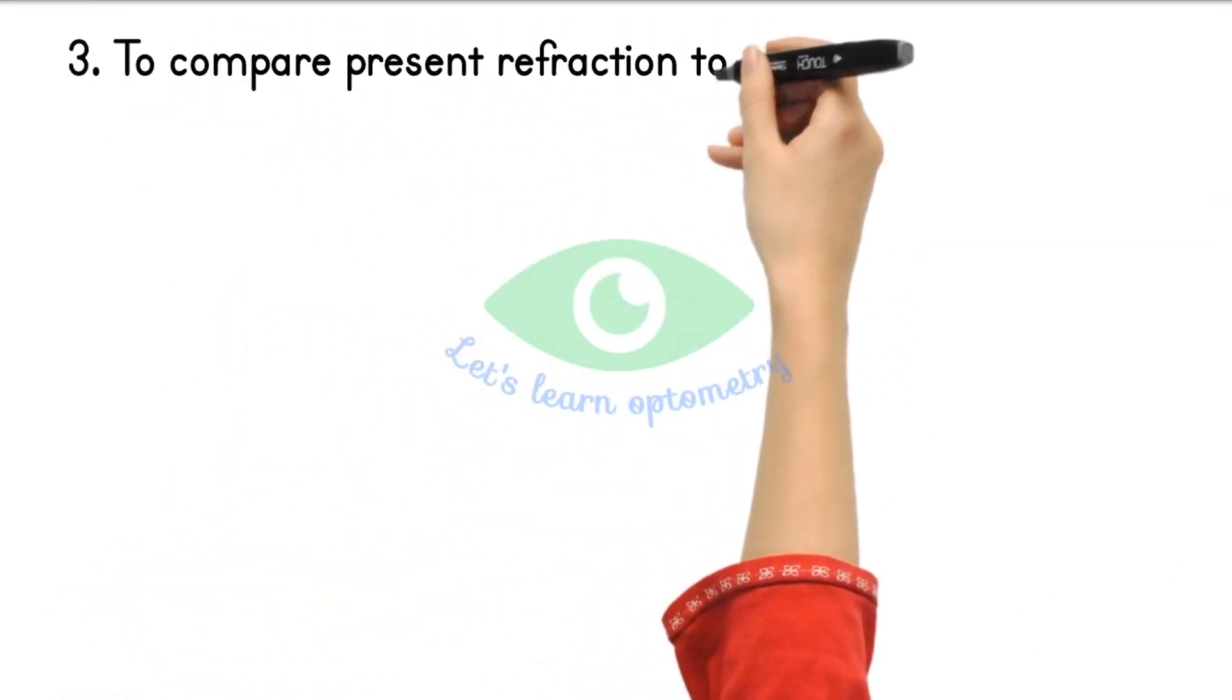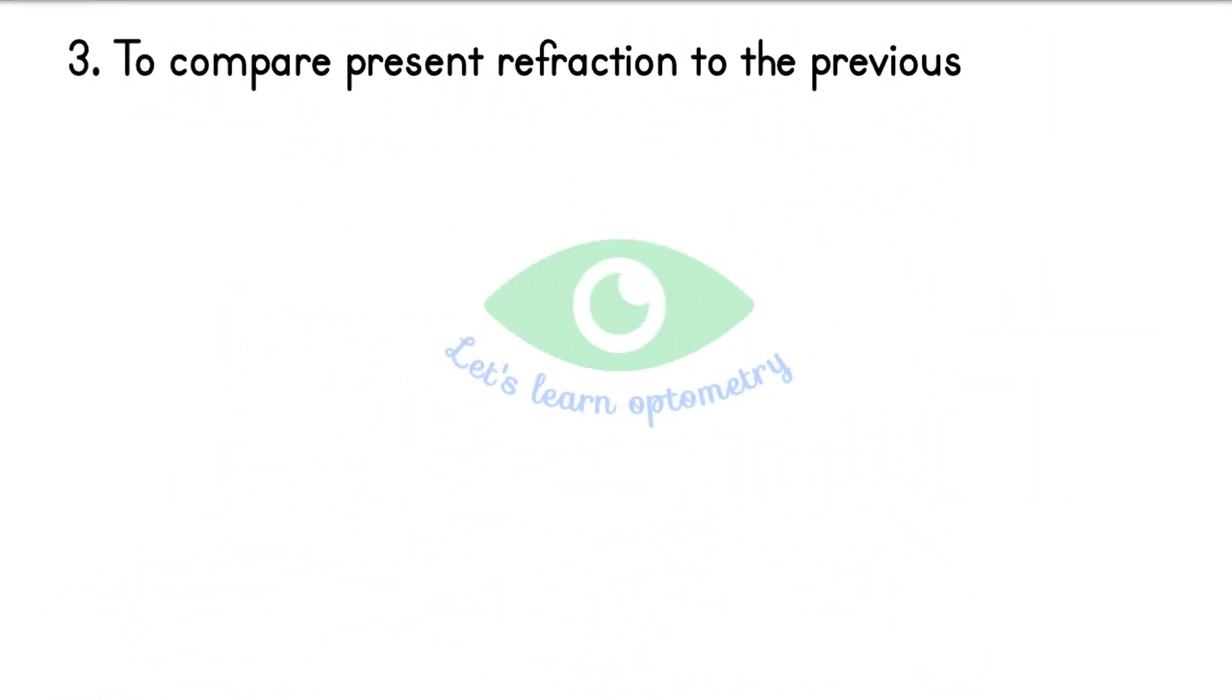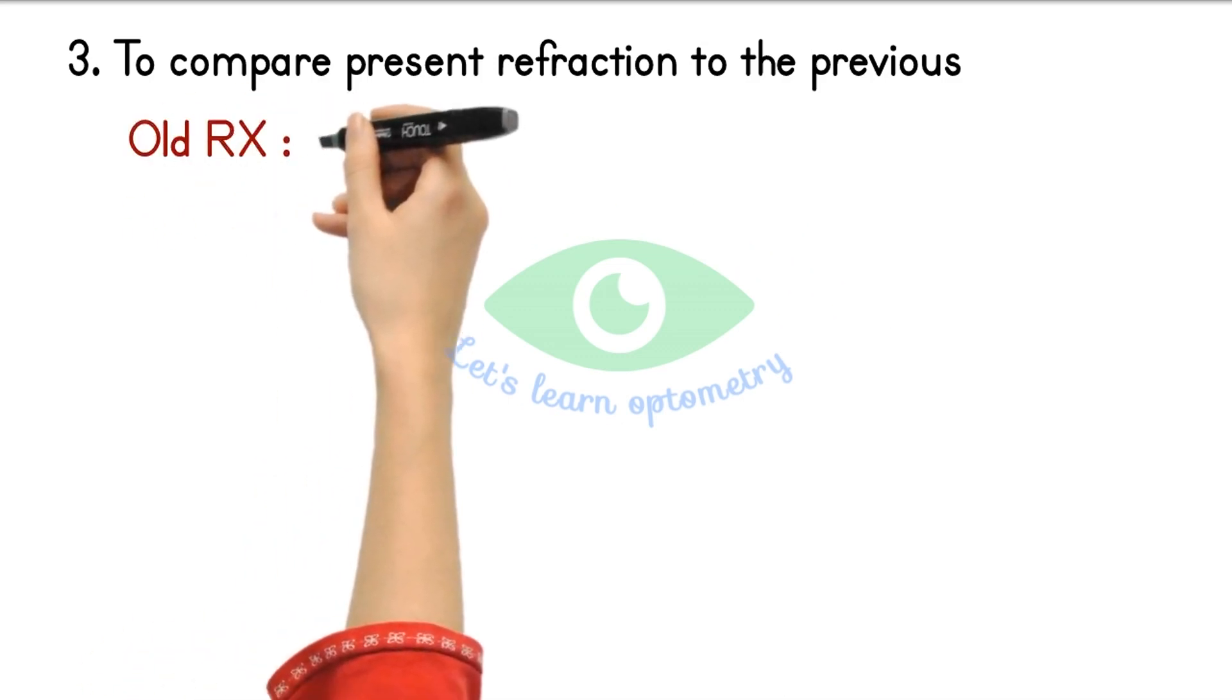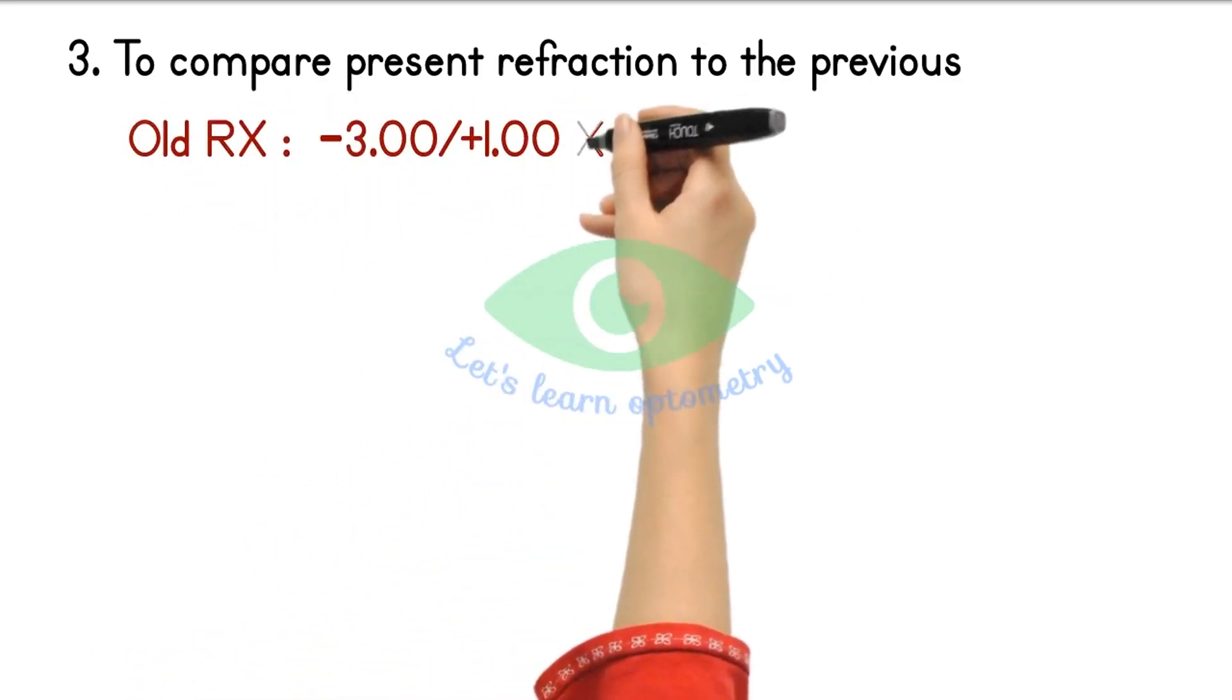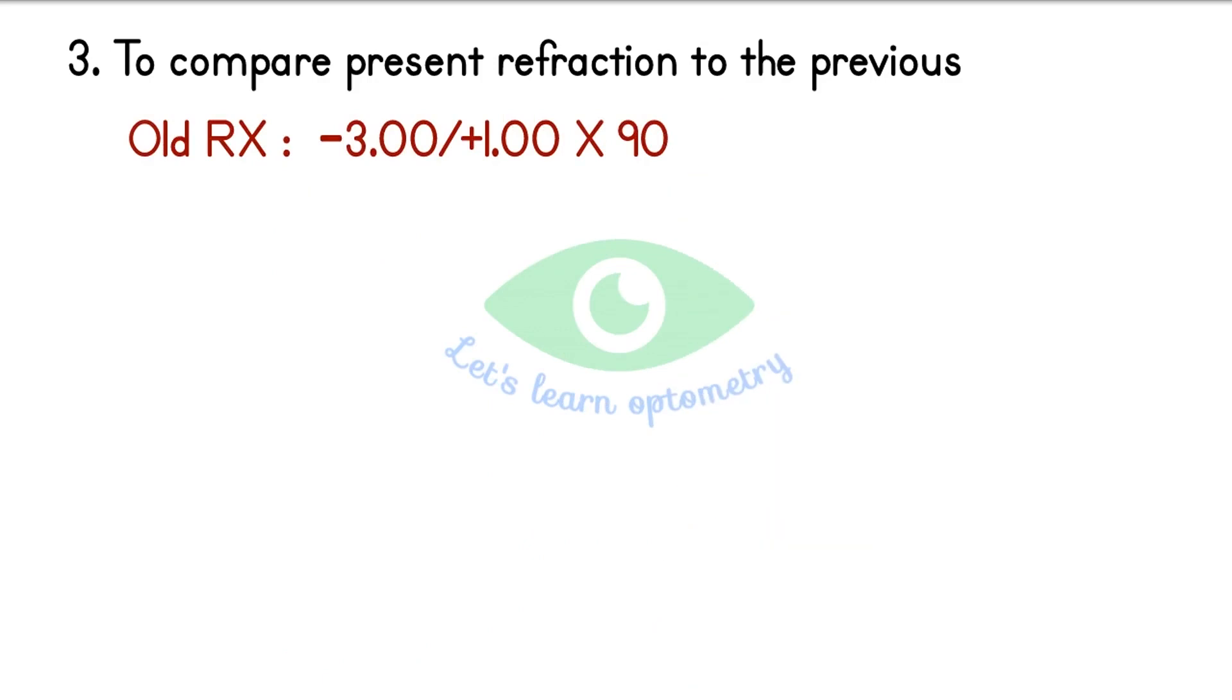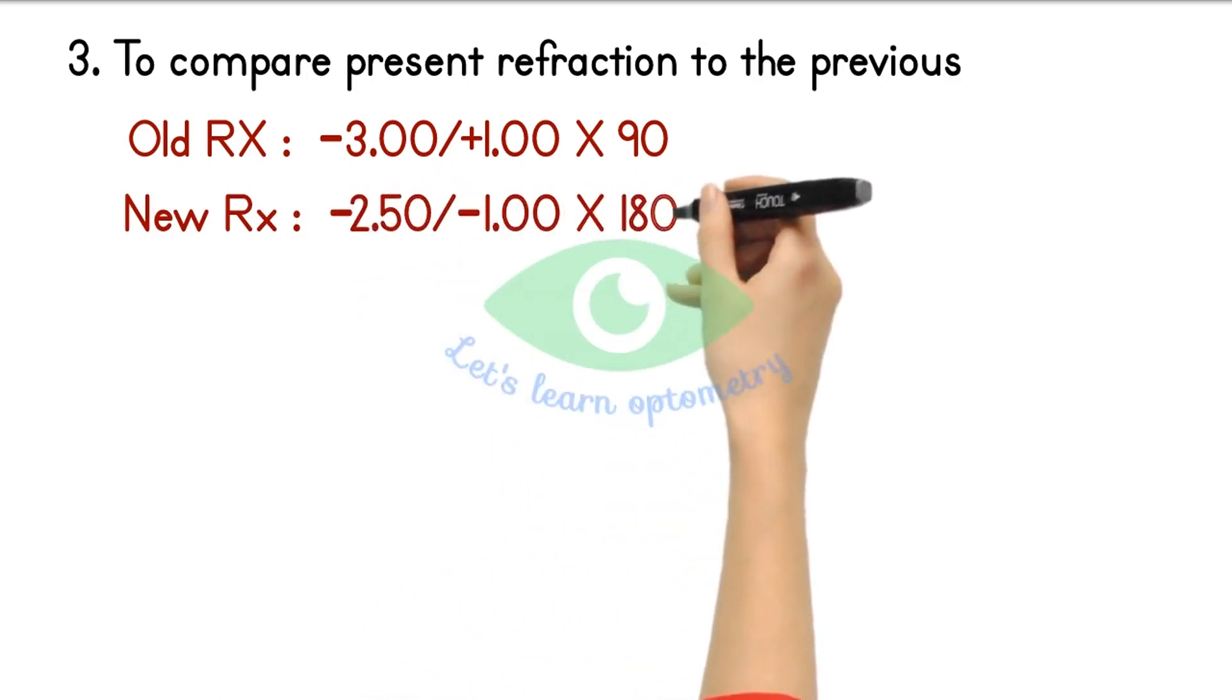To compare the present refraction with the previous refraction. For example, a patient comes to you with his six months old prescription saying that he lost his spectacles recently. So that old prescription shows you minus 3 spherical plus 1 cylinder at 90 degree axis. So now you finish your testing and you get minus 2.5 spherical minus 1 at 180 degree axis.